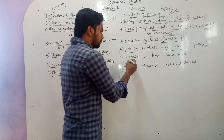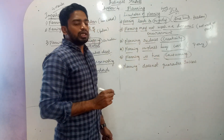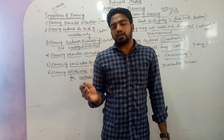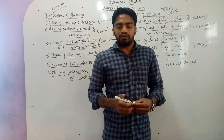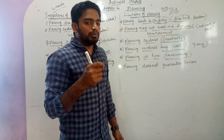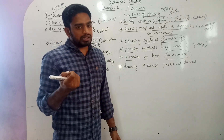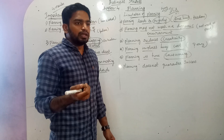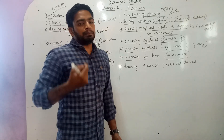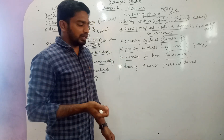Fifth limitation: planning is time consuming. If we make a plan, it will take more time. If we want to achieve the goals of the organization with a perfect plan, it takes more and more time. Without a plan, we can also complete activities within time, but if we make a plan, it may take a longer period of time.